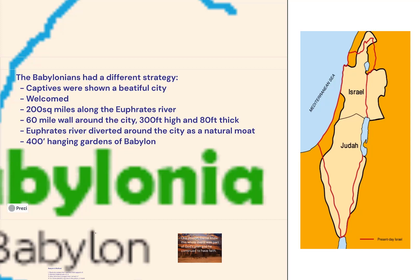Babylon was arranged around 200 square miles along the Euphrates River, with a 60-mile wall around the city that was 300 feet high and 80 feet thick. The Euphrates River was diverted around the city as a natural moat and also ran under the walls to bring resources into the city.